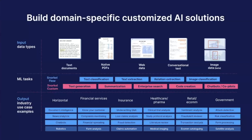The data we work with is usually text — documents, native PDFs, web data — and we also support images. For tasks in Snorkel Flow, we support text classification, text extraction, relation extraction, and image classification. We also have another offering called Snorkel Custom for generative AI tasks such as text generation, summarization, and enterprise search.